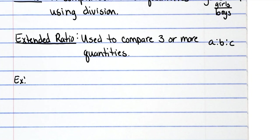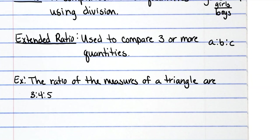So my first example, the ratio of the measures of the angles of a triangle is 3 to 4 to 5, and then find the measures of the angles.